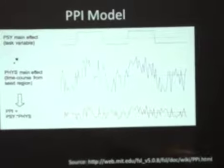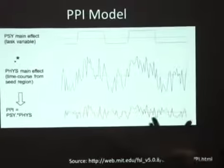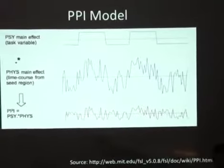I'm using the words PPI and context-dependent correlation interchangeably — they refer to the same thing. The people who first developed this, the Friston lab, back in 1997, called this a psychophysiological interaction, or PPI. The idea is that you have three regressors: a psychological regressor that codes for the task, a physiological variable which is simply the time course of a given seed region, and the interaction term which is the product of these two variables.